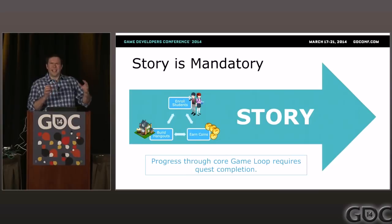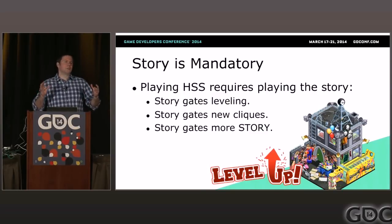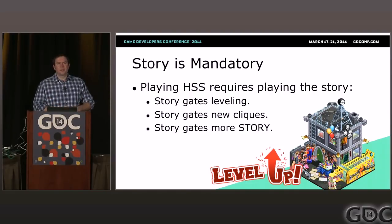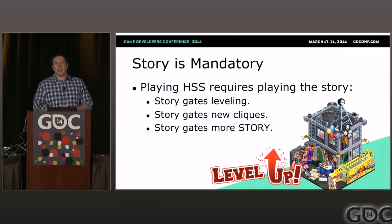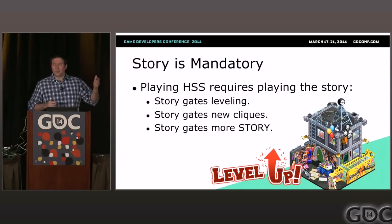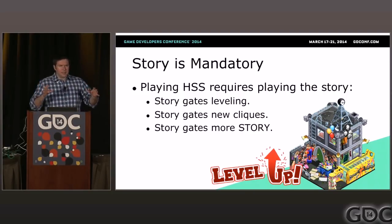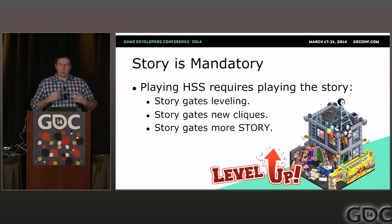What exactly does that mean? Playing High School Story, the story is mandatory. Story gates leveling — you can't get from level one to level two without playing through some story, and you can't get to level 20 from level 19 without playing through some story. Story gates new cliques. At the beginning I showed you jocks, preps, nerds. We also have artists, slackers, rebels, musicians — all the various types of students you can get. To see any of those, you're going to have to play through some story. And the big idea we're hoping to convey today is that story gates more story.